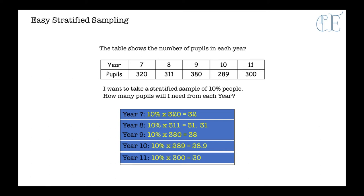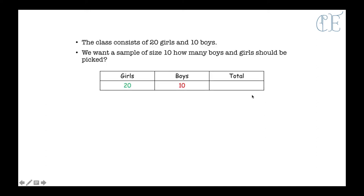So that is basically all you have to do when doing a stratified sample as a percentage. Now here is another example where the percentages aren't used. It says that a class consists of 20 girls and 10 boys. I want a sample size of 10. How many boys and girls should be picked? So in this case what we need to do is find the total of these students which is 30.